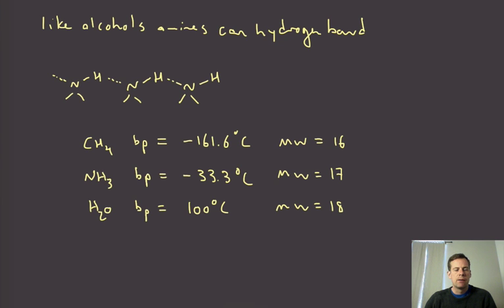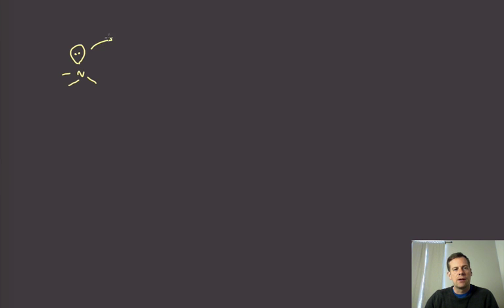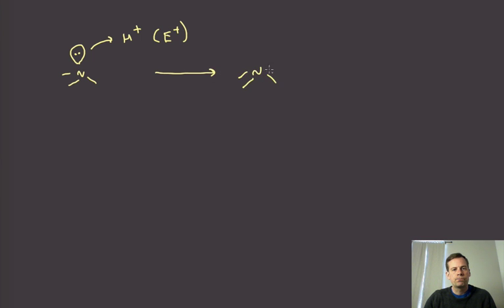Much or probably all of the important chemistry of amines has to do with the fact that they have this free lone pair. As mentioned in the previous lecture, that lone pair is relatively weakly bound to the nucleus, at least in comparison to oxygen and fluorine. Nitrogen is relatively less electronegative, so that lone pair is capable of interacting with either hydrogen or electrophiles. If it's the proton, we simply protonate the amine and go to the ammonium salt.